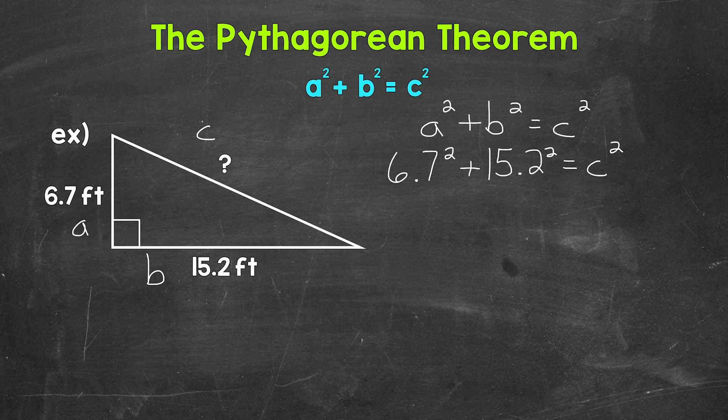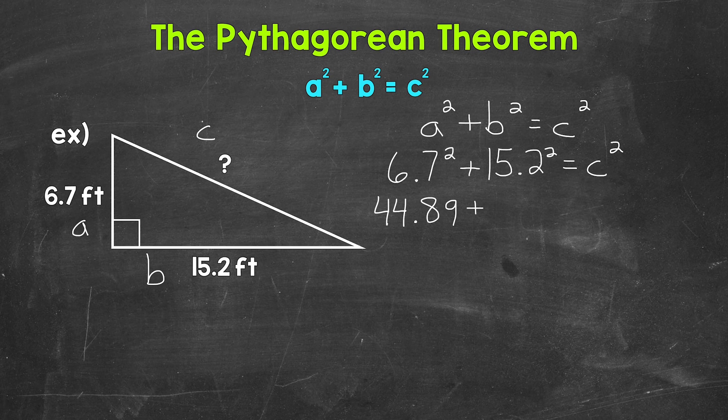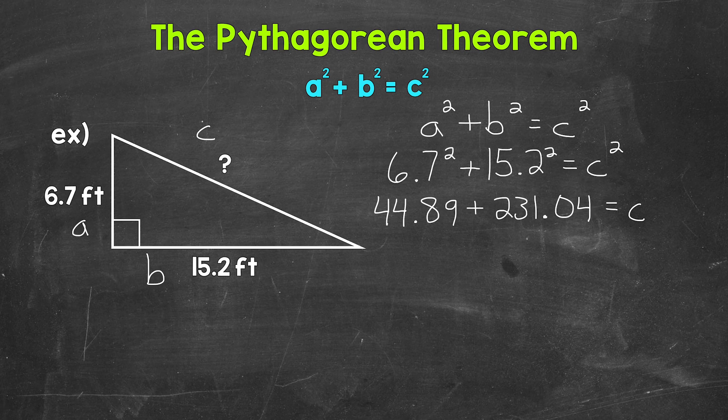Now we just continue to work through that equation until we figure out what c equals. 6.7 squared gives us 44.89 plus 15.2 squared gives us 231.04 equals c squared.